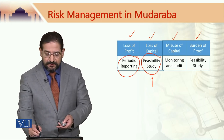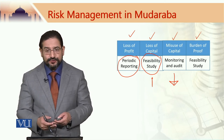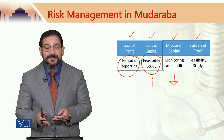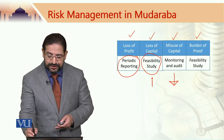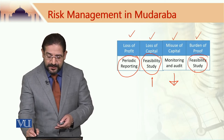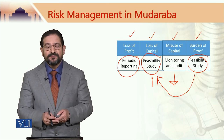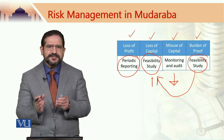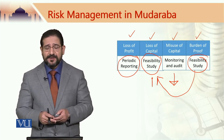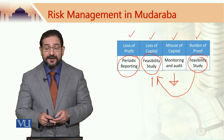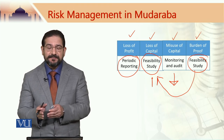For misuse of capital, monitoring and auditing can be used to ensure that the capital is not misused. The burden of proof can actually be shifted to the Mudarib if a feasibility study has been provided by the Mudarib. However, all these measures would not take away all the risks. We are trying to understand how risks can be minimized in Islamic structures.